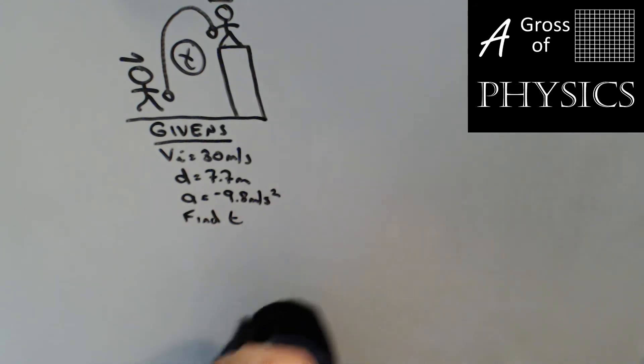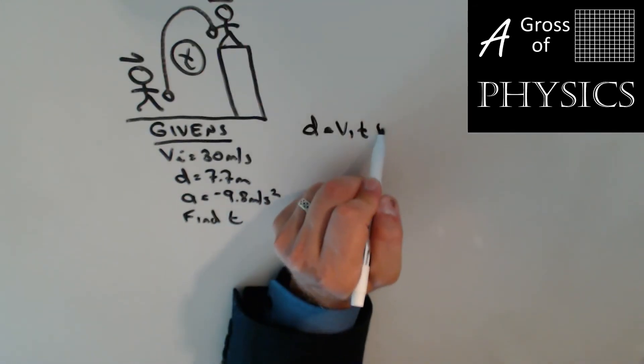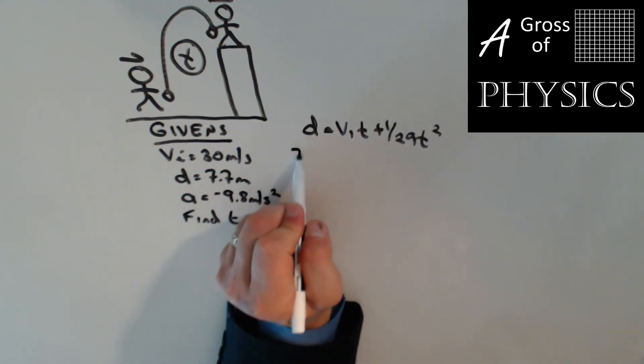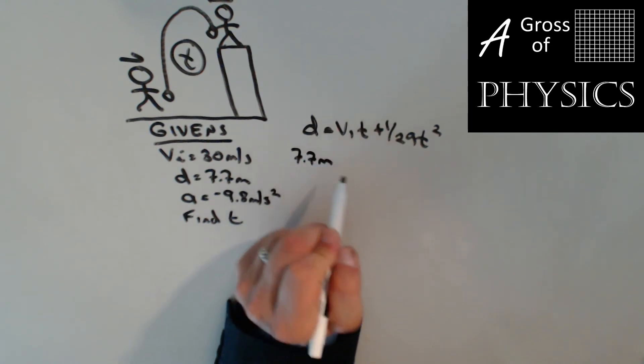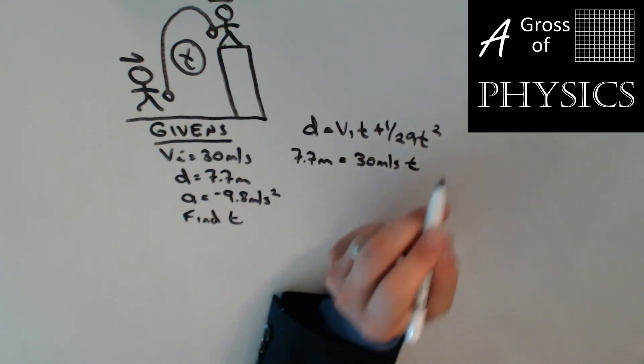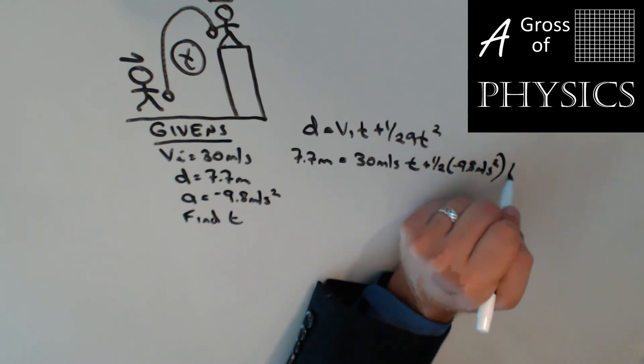So I'm thinking equation 4, d equals Vi*t plus one half a*t squared, is going to be appropriate for this problem.